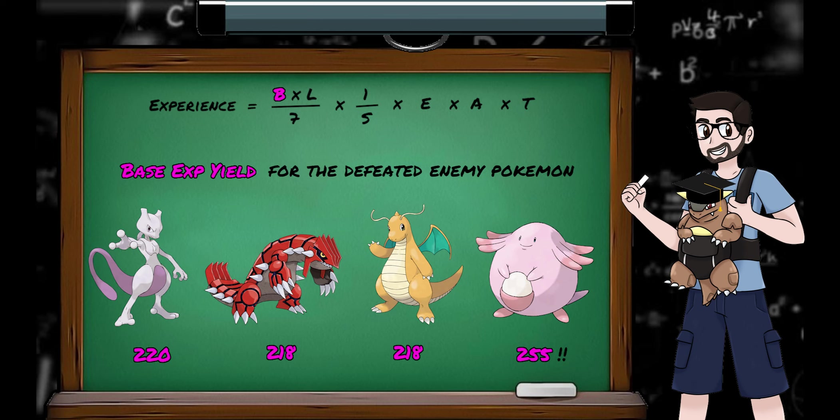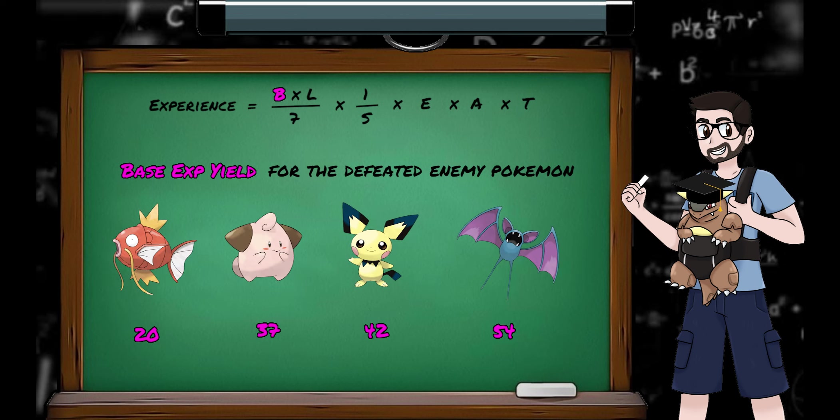So final evolutions, legendaries, and rare Pokemon like the Chansey line have high base yields, whereas common or weak Pokemon like Magikarp or the Babies have low base yields.